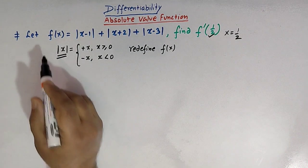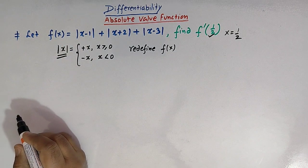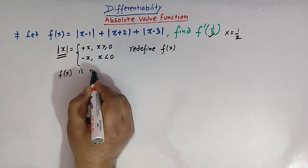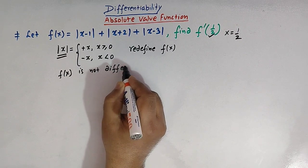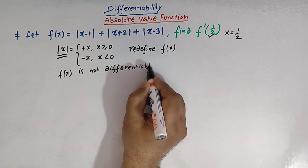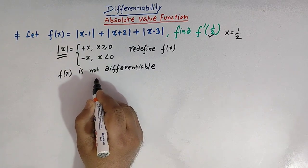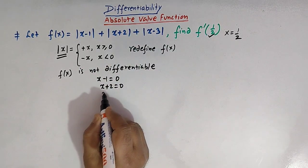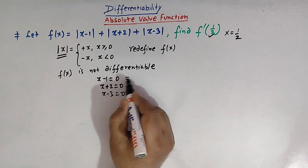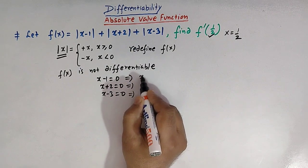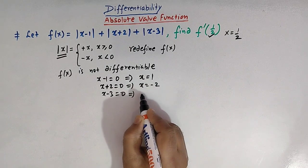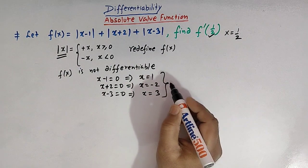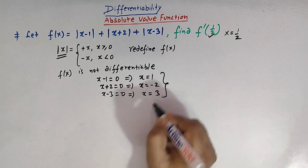If we closely look at this function f of x, we can easily see that it is not differentiable at the points given by x minus one equals zero, x plus two equals zero, and x minus three equals zero. Solving these three linear equations, we get x equals one, x equals minus two, and x equals three. So f of x is not differentiable at these three points.